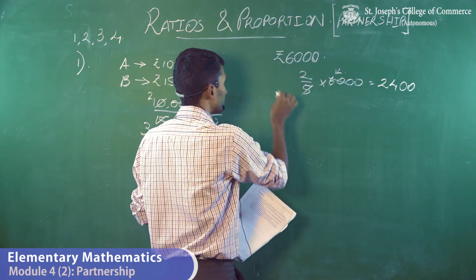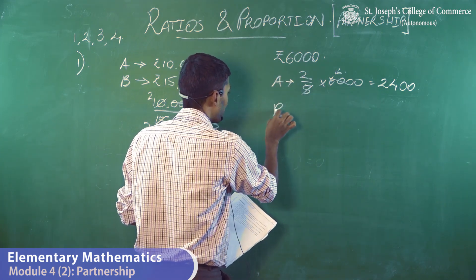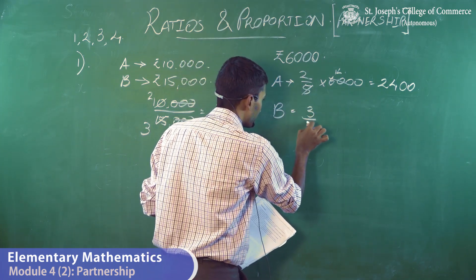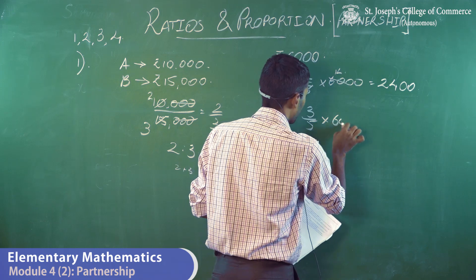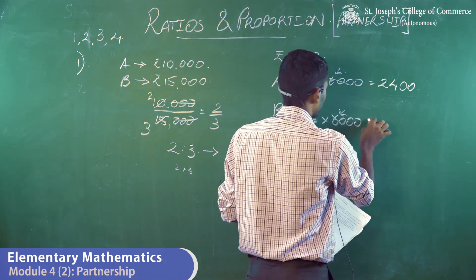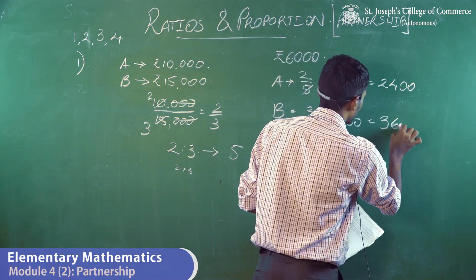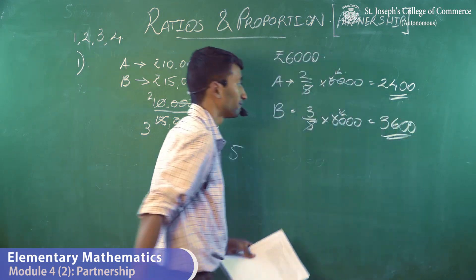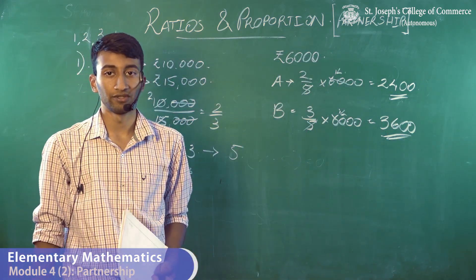So A gets 2,400. B gets three parts out of five, which is three-fifths of 6,000, equal to 3,600. So A gets 2,400 and B gets 3,600.